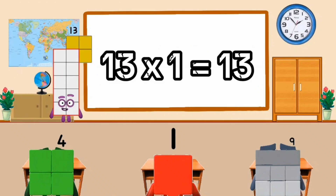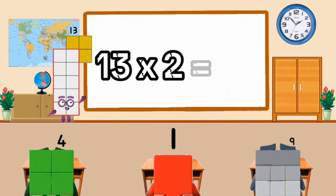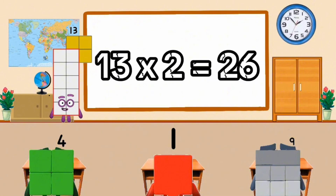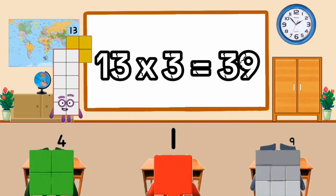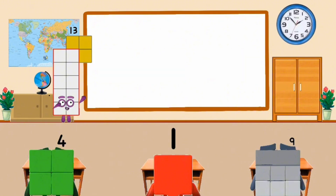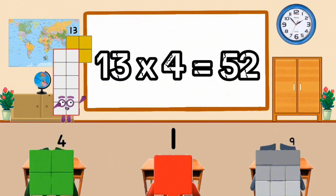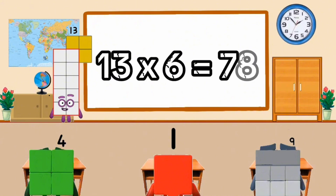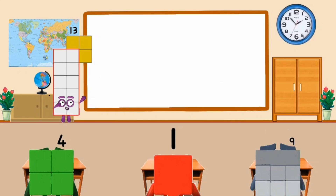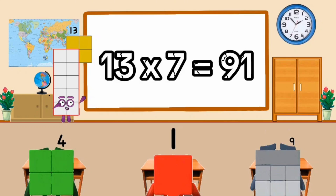13 times 1 equal 13. 13 times 2 equal 26. 13 times 3 equal 39. 13 times 4 equal 52. 13 times 5 equal 65. 13 times 6 equal 78. 13 times 7 equal 91.